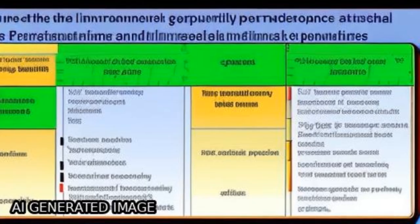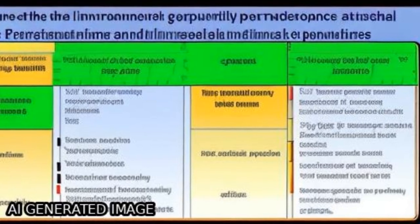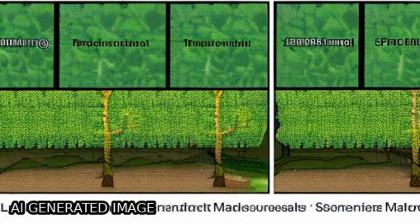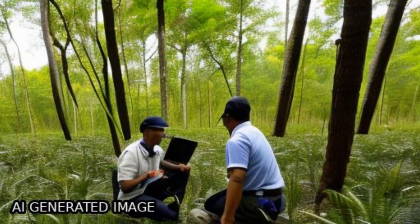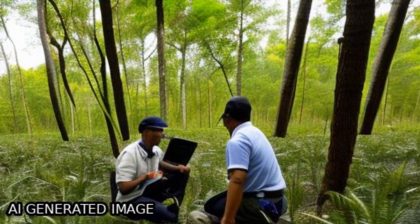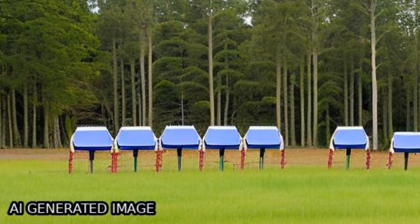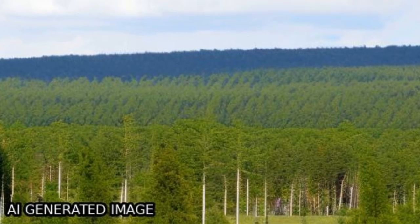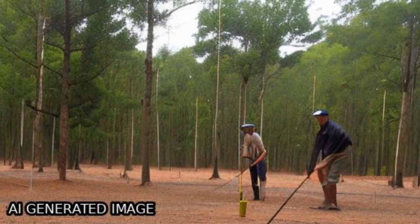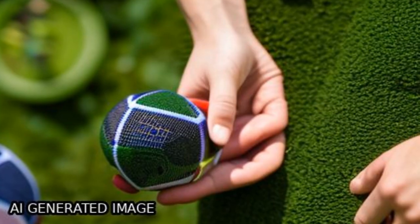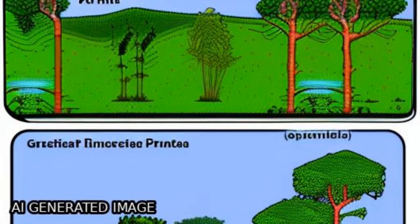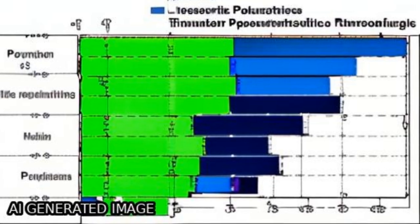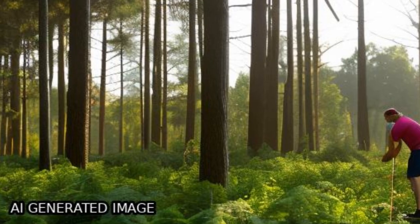This study aimed to estimate spatiotemporal patterns of net primary productivity (NPP) in a forest plantation area using the Carnegie-Ames-Stanford Approach (CASA) model, and to study the effects of climate variables on NPP using a generalized linear modeling (GLM) approach.